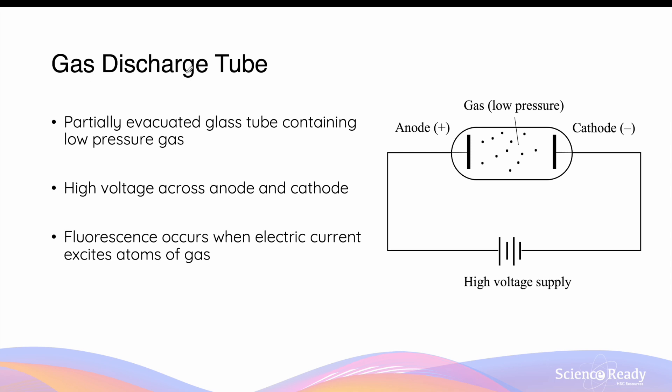By way of review, gas discharge tubes are partially evacuated glass tubes containing low pressure gases such as hydrogen gas. When a high voltage is applied across the two metal electrodes, the anode which is positive and the cathode which is negative, an electric current can be conducted through the low pressure gas.